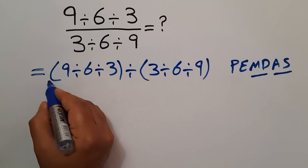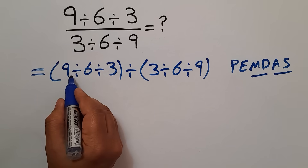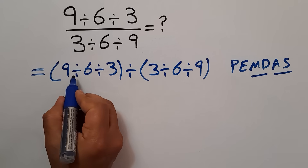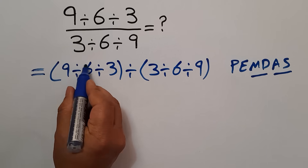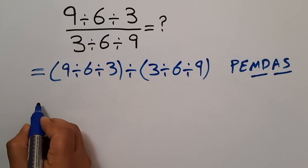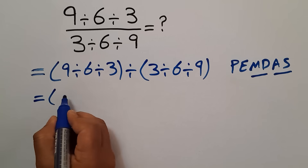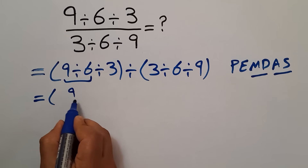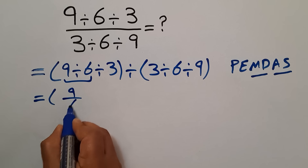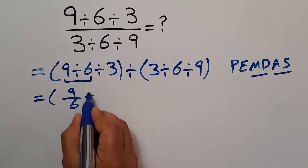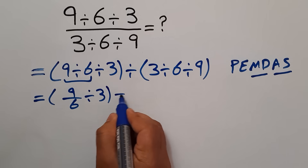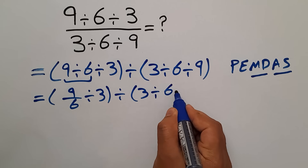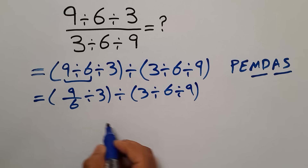According to PEMDAS, first we have to handle these parentheses, and inside these parentheses we have division. So first this division: 9 divided by 6 can be written as 9 over 6 and divided by 3, divided by parentheses 3 divided by 6 and divided by 9.